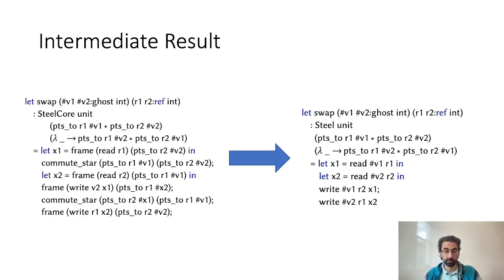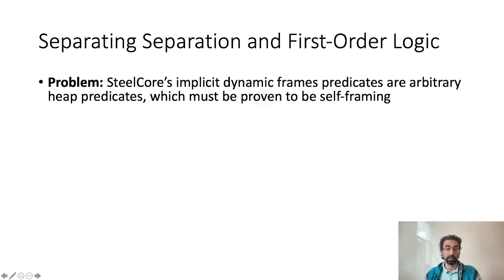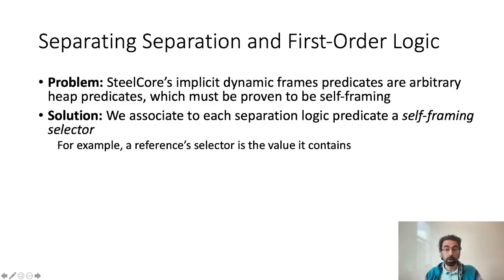I will quickly show next how we can remove them in STEEL, providing a style akin to implicit dynamic frames. The main challenge with combining separation logic with heap predicates is that, to be sound, heap predicates must be self-framing. That is, they can only depend on the part of a heap corresponding to the separation logic context. This self-framing requirement is quite complex to reason about. It is higher-order and interacts very badly with SMT. To solve this issue, we instead propose a new notion of selector, which corresponds to a self-framing representation of a separation logic predicate. For instance, the selector of a reference could be the value it contains in memory.